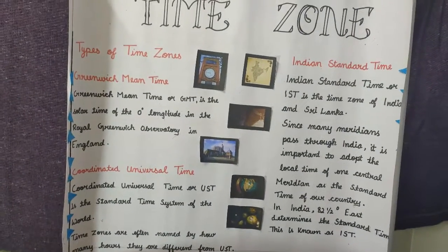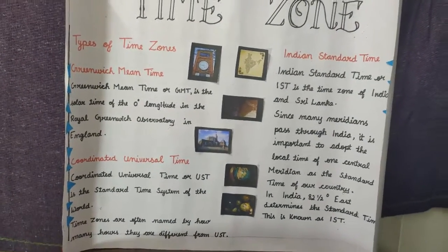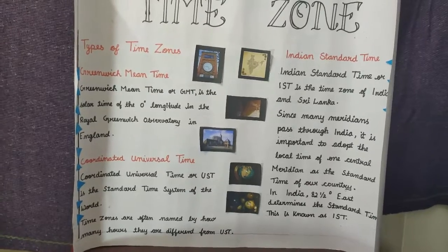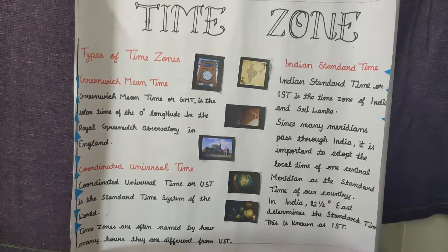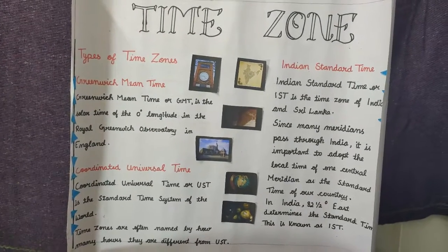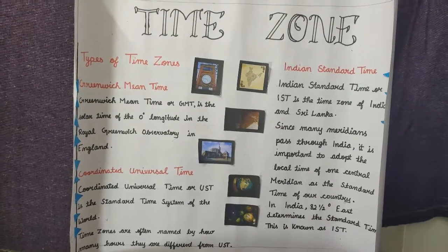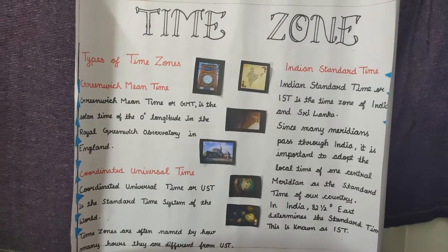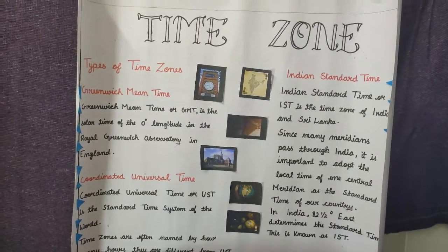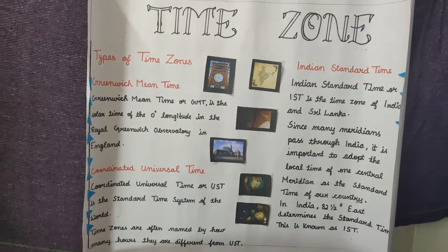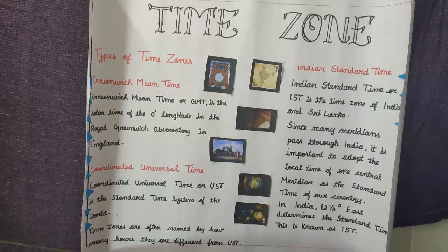So what are the purposes of time zones? Due to the rotation of the earth, the time differs in different places. To standardize the time and prevent confusion during long travels, the earth was divided into time zones.